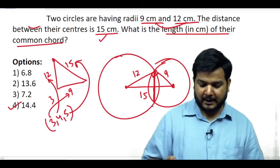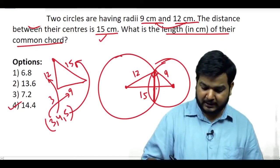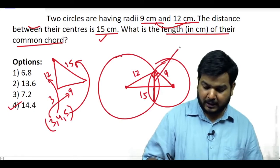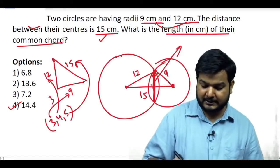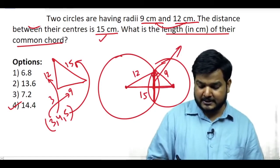Ab jab yeh angle 90 degree ho gaya toh aapko common chord ke length nikalni hai. Aapko kaise milega? Common chord ke length aapko kuch nahi karna hai na. Yeh duri nikal lo itni duri nikal lo aur iska double kar do, common chord ke length mil jayega.